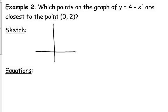So let's talk about this optimization problem. The question is, which points on the graph of y equals 4 minus x squared are closest to the point (0, 2)? Now, first of all, this is going to be a calculator inactive question, I can promise you.